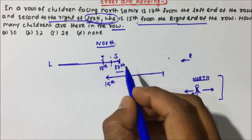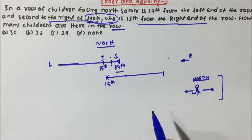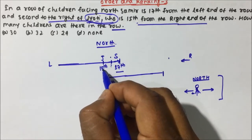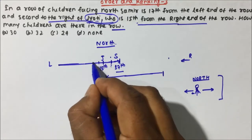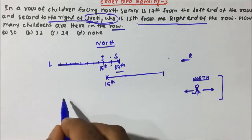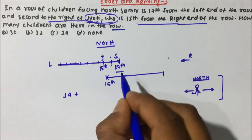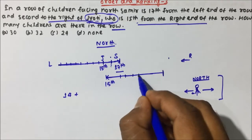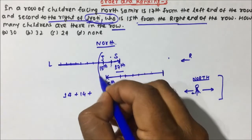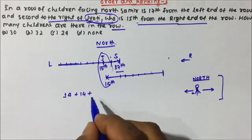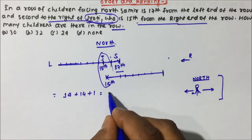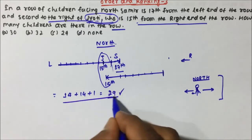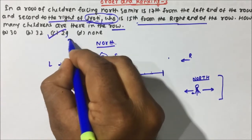Now they are asking how many children are there in the row. The position of Jyoti from the left is 15th, which means before Jyoti there are 14 children. And Jyoti's position from the right end is also 15th, which means after Jyoti there are also 14 children. Plus one for Jyoti herself. So 14 plus 14 is 28, plus 1 equals 29. There are 29 children in the row. Option C is the correct answer.